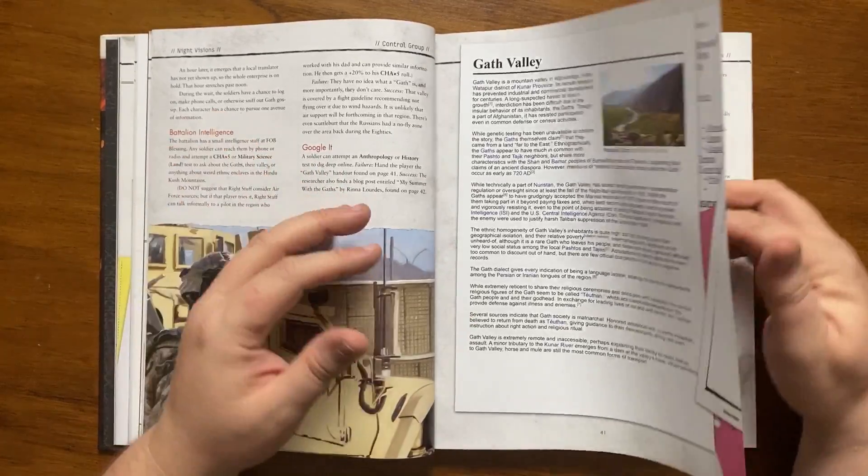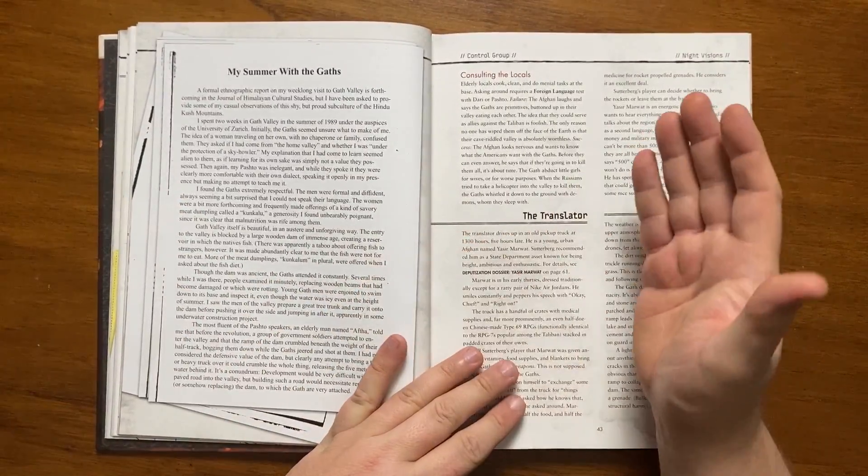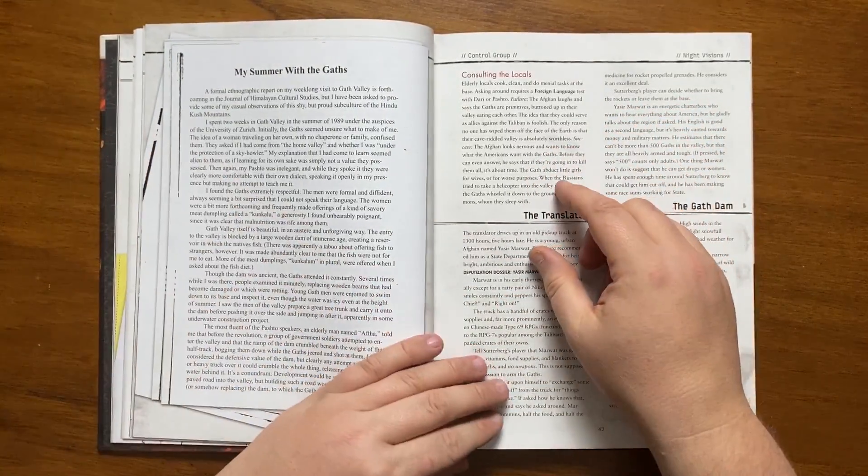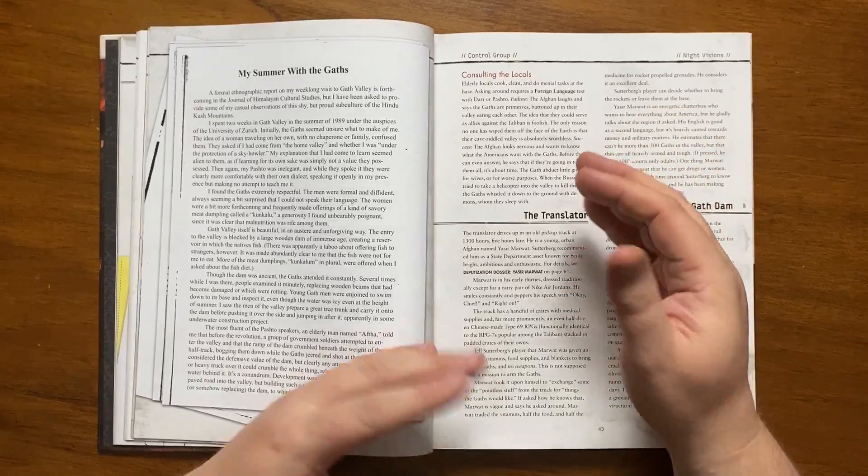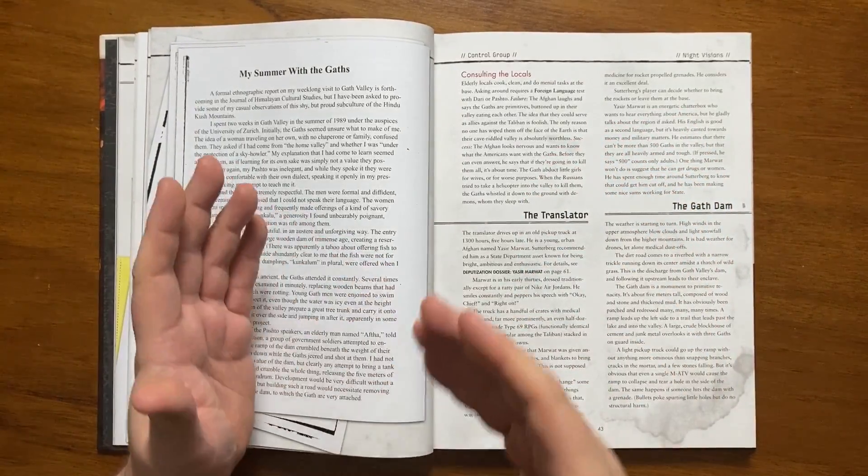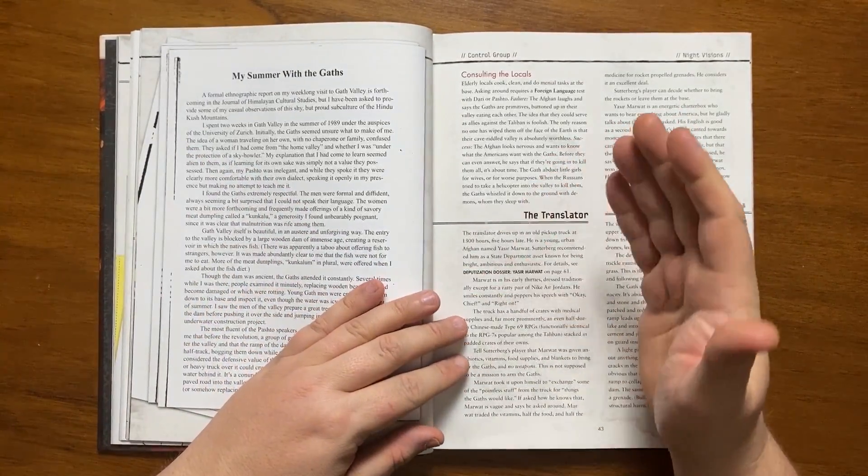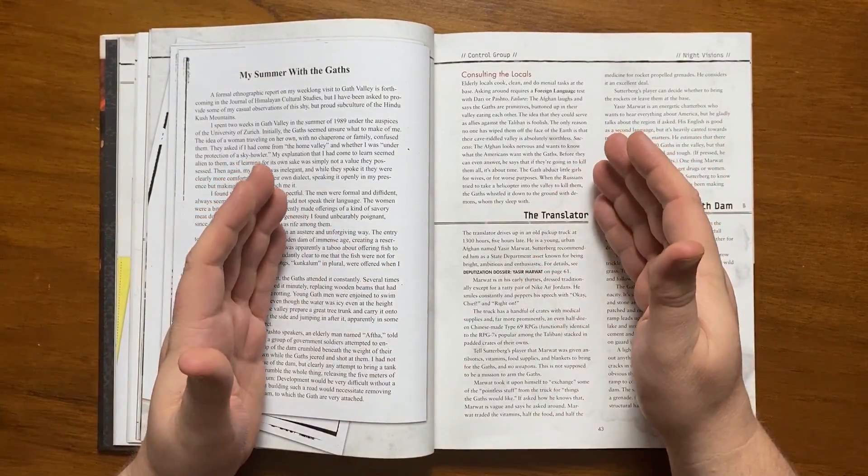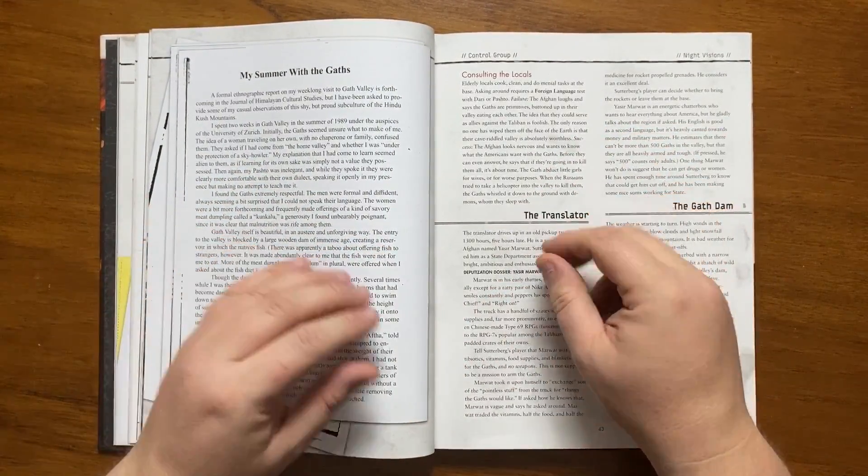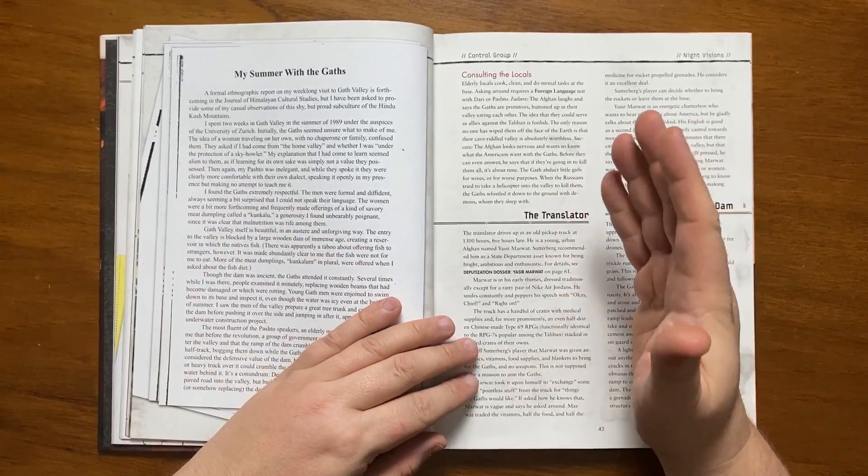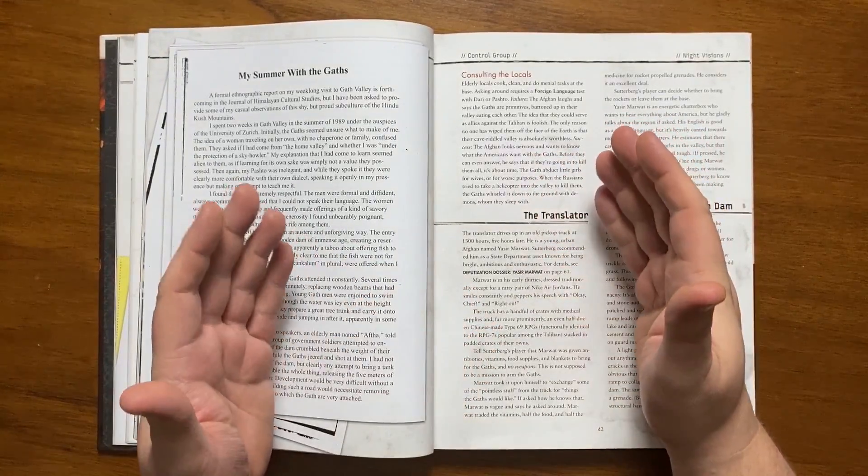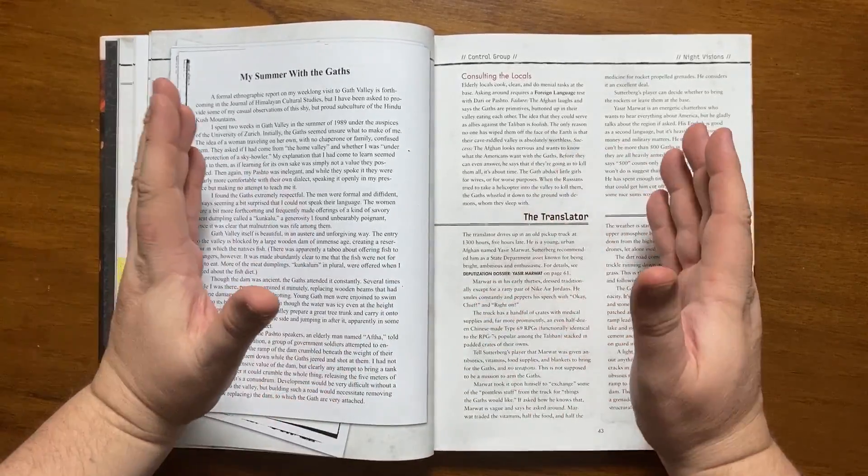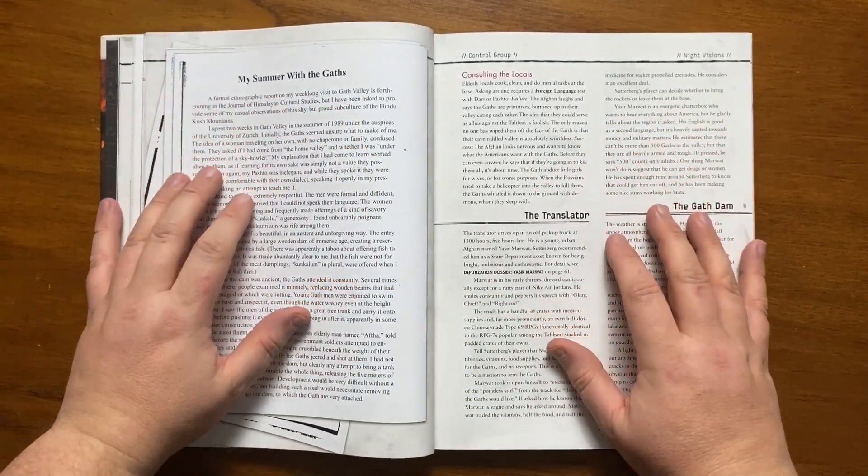The second article, which is found on a successful role, is entitled My Summer with the Gaths, and is from someone's ethnographic report of the subcultures of the Hindu Kush mountains. It recounts the story of someone who went to stay with them for two weeks in the summer of 1989. The Gath were confused that the person who was female didn't travel with chaperone or family. They asked if she was under the protection of a sky howler. It's revealed that they speak Pashto, but also their own dialect. The author writes that she found them extremely respectful, and that she was offered a savoury meat dumpling called a kunkhalu, which was odd as they were clearly suffering from malnutrition.